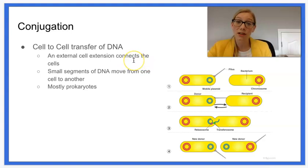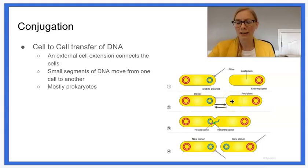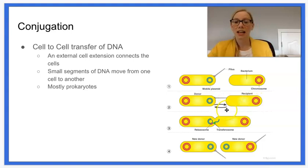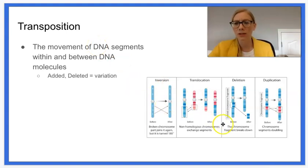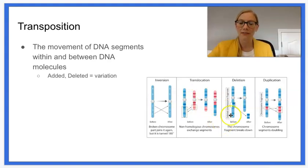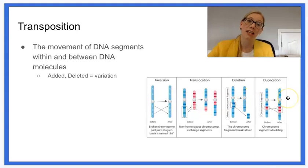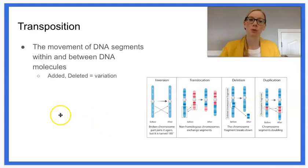Conjugation is cell-to-cell transfer of DNA. It's kind of like an external bridge that connects from one bacteria to another, and so small segments of DNA are able to move from one side to the other. Transposition is the movement of DNA segments within and between DNA molecules. Typically we're talking about chromosomes, and how we can have things mix up on the chromosomes — we can delete portions, we can add portions, we can switch them over — all of these things we call transposition.